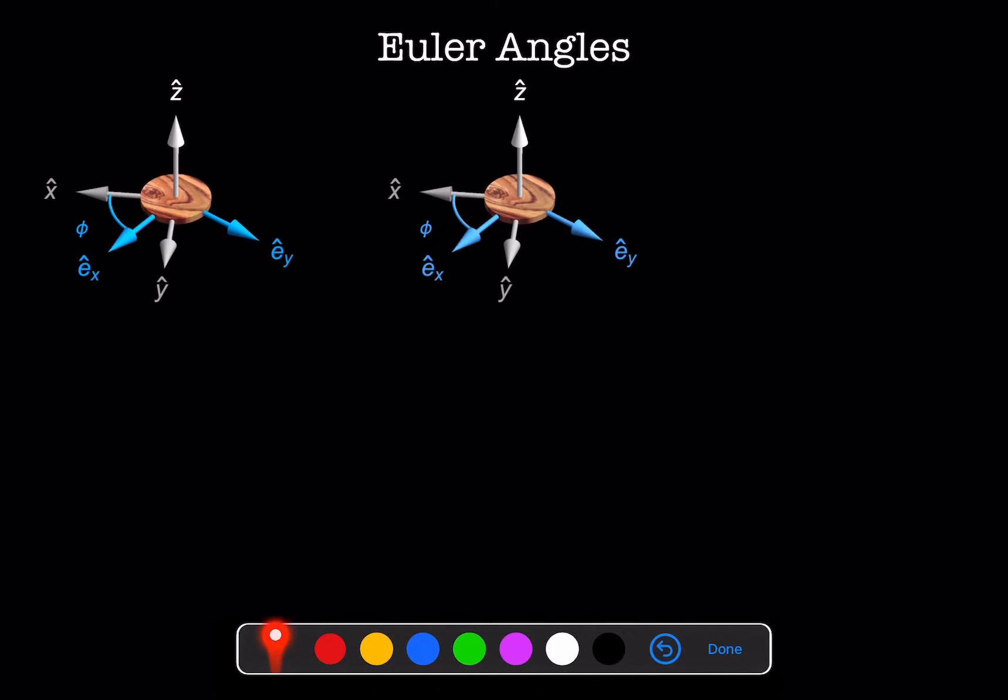Then, we'll rotate this new coordinate system about the E_y axis, and we're going to rotate this by angle theta. The z-axis now becomes E_z, and the E_x axis now becomes E_x prime.